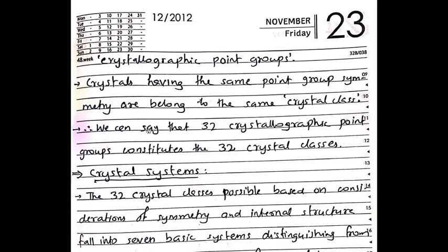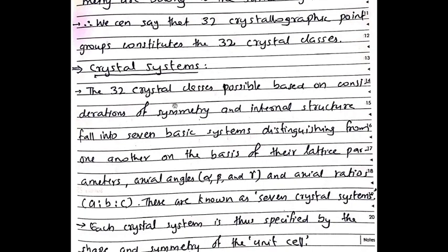Crystals having the same point group symmetry belong to the same crystal class. So we can say that the 32 crystallographic point groups constitute 32 crystal classes.